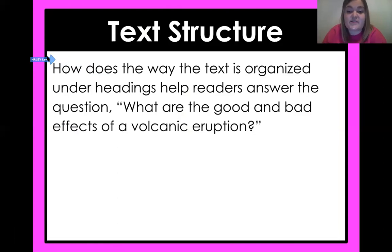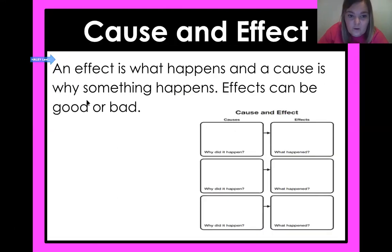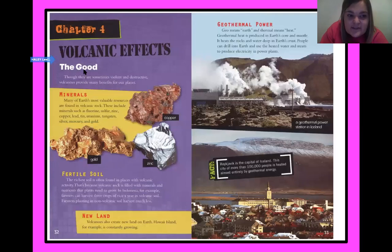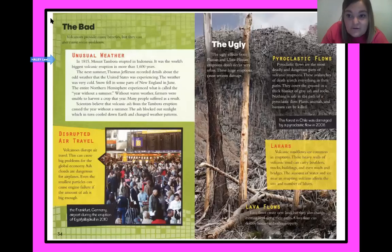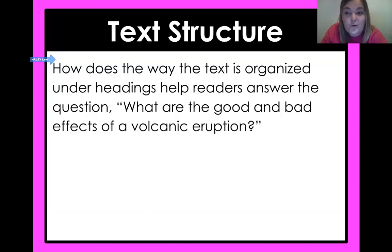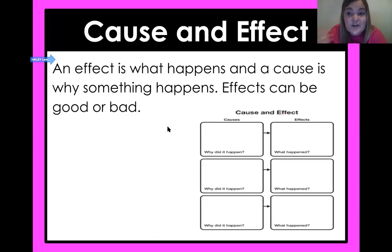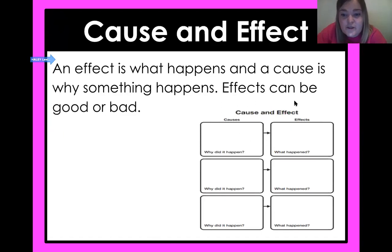Let's look at the text structure: how does the way the text is organized under the headings help readers answer the question 'What are good and bad effects of a volcanic eruption?' If you needed to know the good effects, they're all under the 'good' heading; bad effects are under the 'bad' headings. The author did a great job organizing this so we can find the information we need easily. An effect is what happens; a cause is why it happened — effects can be good or bad.